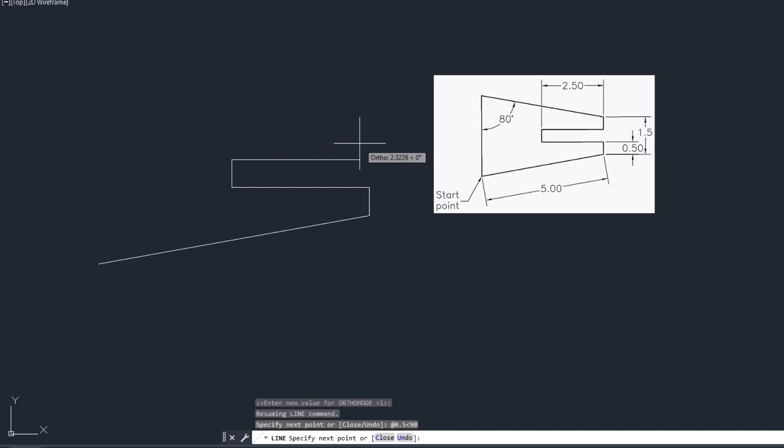Let's move on the right side, which has got 2.5 mm length. So shift at the rate 2.5 less than, but it is pointing in a 0 degree direction. So I will type less than 0 degree and enter.